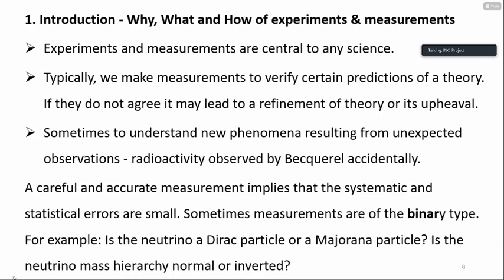These are binary-type measurements, and experiments are being designed to determine which answer is correct. Sometimes even a seemingly binary proposition is extremely difficult to decide. For instance, the neutrino was proposed in 1930, and ninety years later we still do not know whether it is a Dirac or a Majorana particle — whether the neutrino is its own antiparticle or not. So sometimes it takes a very long time to answer even a binary question.